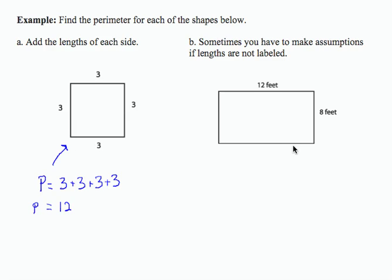The second object, sometimes we need to make assumptions when information is not written in the problem. So this side length is 12 feet, the one below it and parallel to it is also 12 feet.